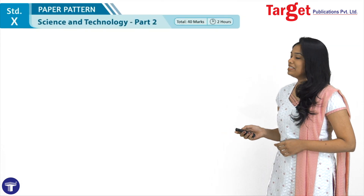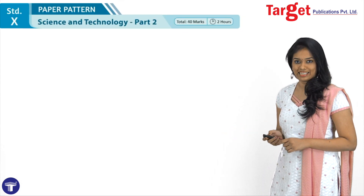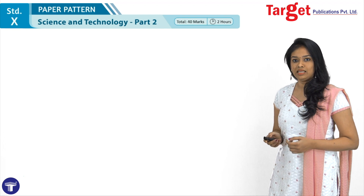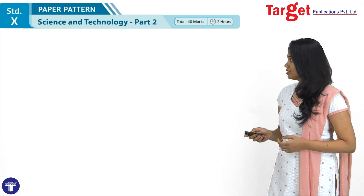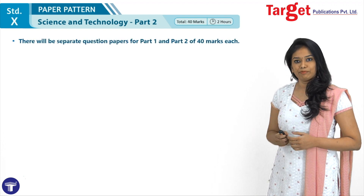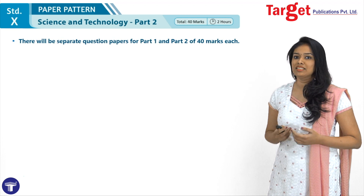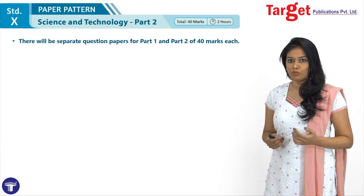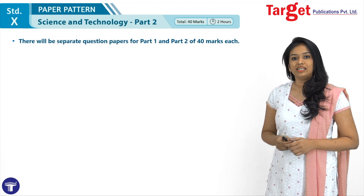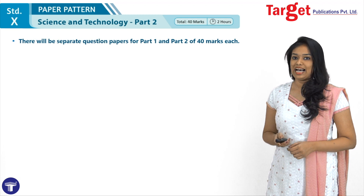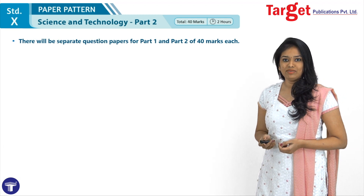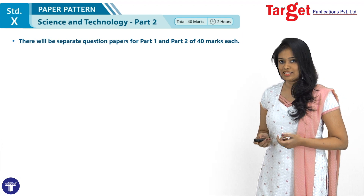The paper pattern of Science and Technology Part 2 is of 40 marks and would be for 2 hours. There will be separate question papers for both Part 1 and Part 2, containing 40 marks each, and you would be required to attempt each in 2 hours.